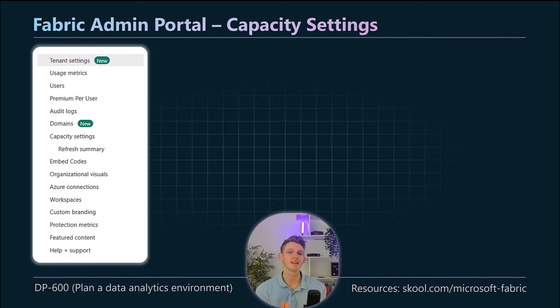Another important section in the Fabric admin portal is the capacity settings. In here you can create new capacities, delete capacities, manage the capacity commission, and change the size of a capacity. These are important capacity settings you need to be aware of and understand how to manage within your Fabric environment.